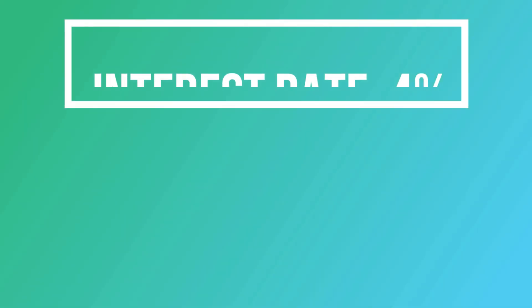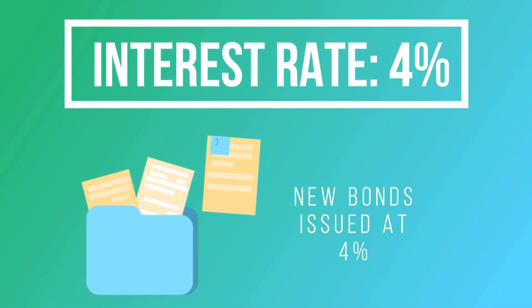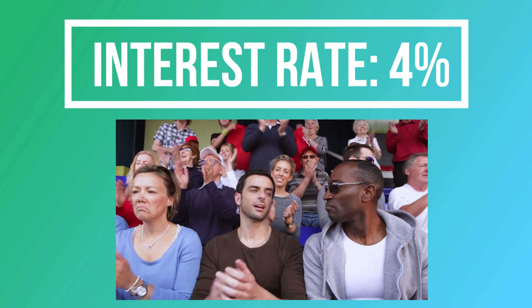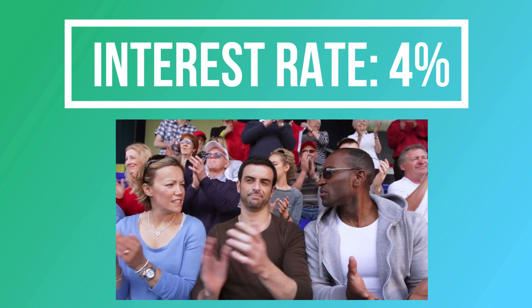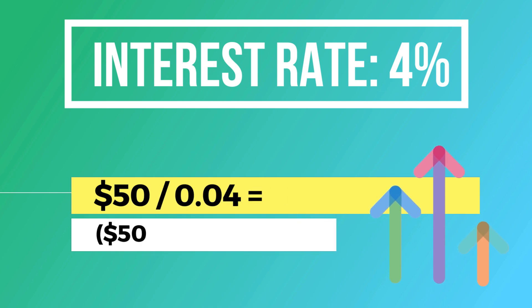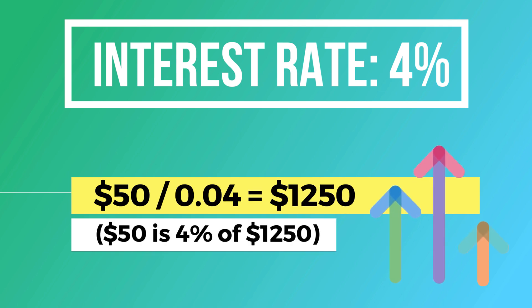On the other hand, if the interest rate falls to 4%, new bonds will be issued at a 4% coupon rate, leading to an increased demand for the 5% bonds. This will drive up its price until $50 provides an effective yield of 4%, making the bond's price $1,250.